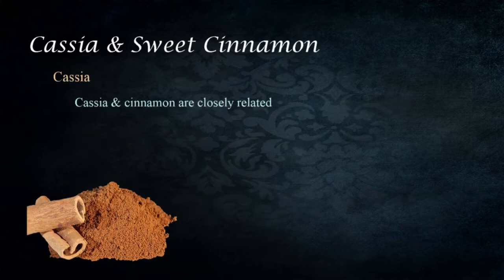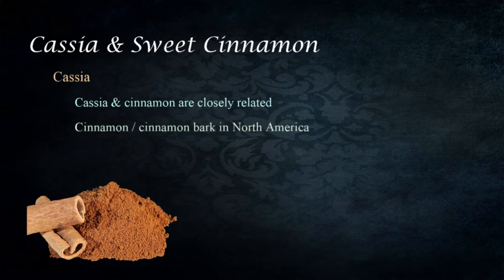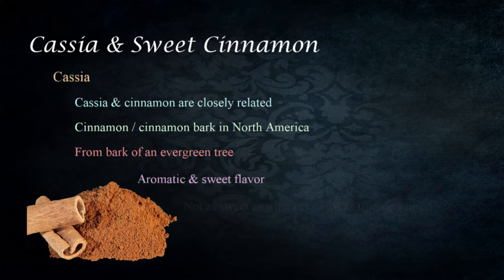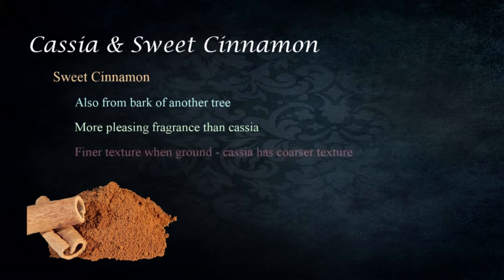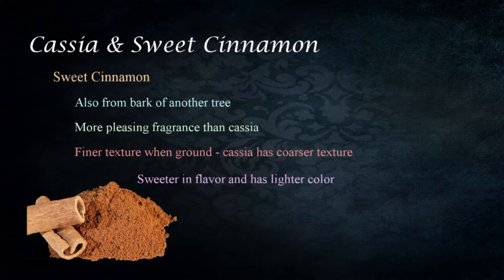Two of the ingredients, cassia and sweet cinnamon, are closely related. Cassia is more readily known and often referred to as cinnamon or cinnamon bark in North America, harvested from the bark of an evergreen tree. Sweet cinnamon is also from the inner side of the bark of another tree but has a more pleasing fragrance and when ground becomes a finer powder, whereas cassia retains a coarser texture. True cinnamon is sweeter in flavor and has a lighter color than cassia, though both are aromatic and used medicinally as spices and fragrances.